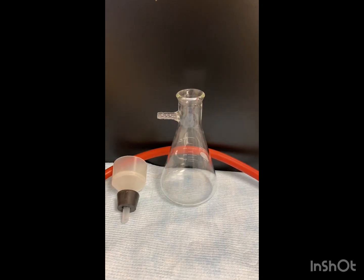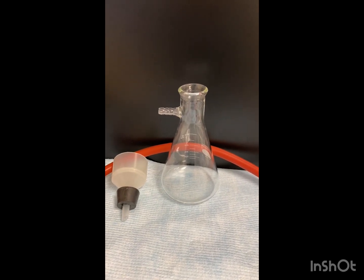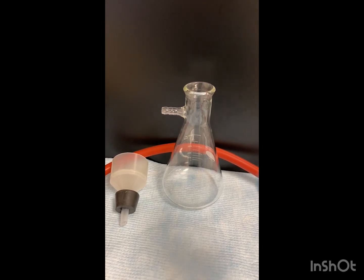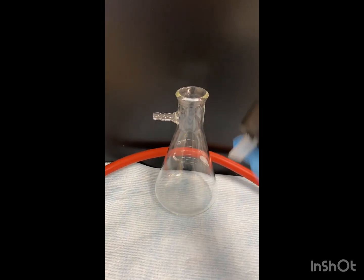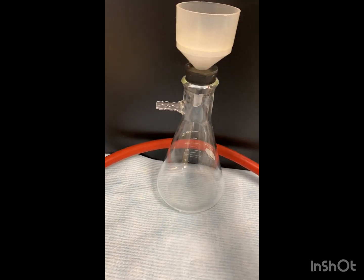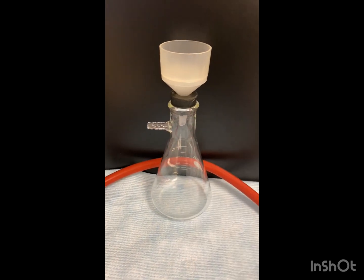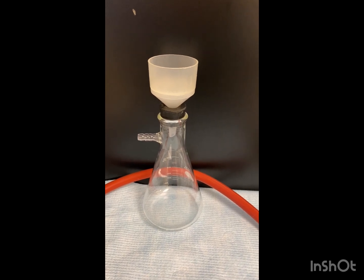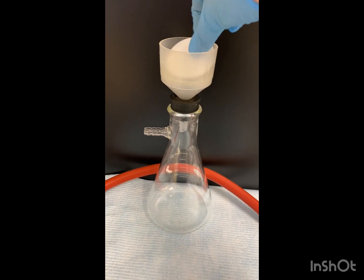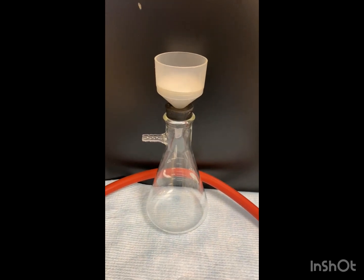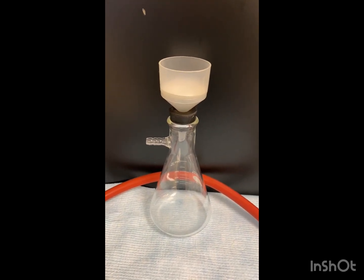While we are refluxing, we can go ahead and set up our vacuum filtration. So you need a filter flask, a Buchner funnel, an adapter, and a red vacuum hose, and you just hook it up to the vacuum nozzle, and we're ready. And of course, our filter paper - make sure you use the correct size, and then you're ready for your vacuum filtration.